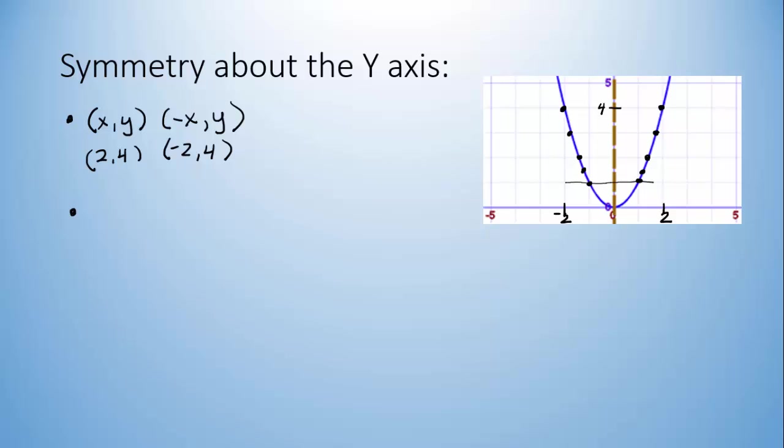Another is just by looking at the graph. You should be able to fold it in half vertically. Imagine here's that axis of symmetry right here. If you folded this on the axis of symmetry, the graph would line up right on top of itself, and that shows that it's symmetric around the y-axis.